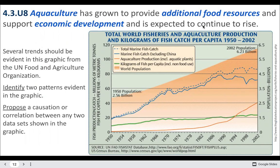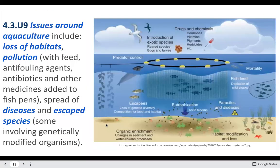Aquaculture has been expanding really rapidly as human population increases, and it's a viable option to meet that increasing need. It provides additional food resources, supports economic development, and is expected to continue to rise. Depending on the species, it really affects how sustainable aquaculture is as a solution. Some issues include loss of habitats — for example, when growing shrimp, you have to destroy a lot of mangroves to put in the shrimp farm. Mangroves are really rich habitat that also help with flood control, nutrient cycling, and sea level rise.